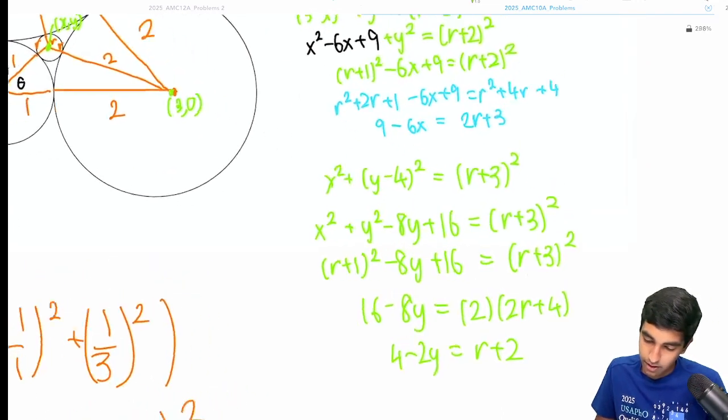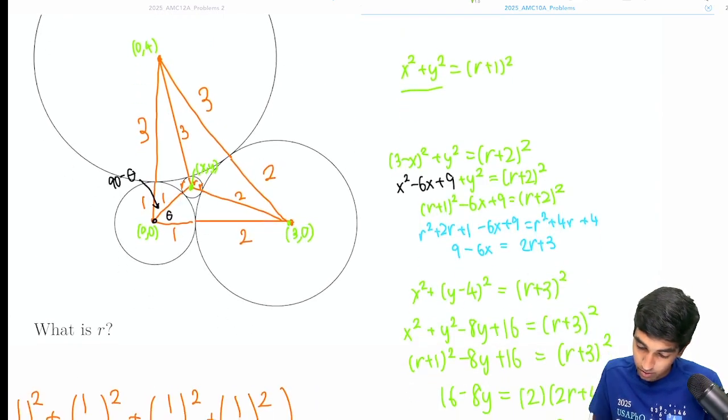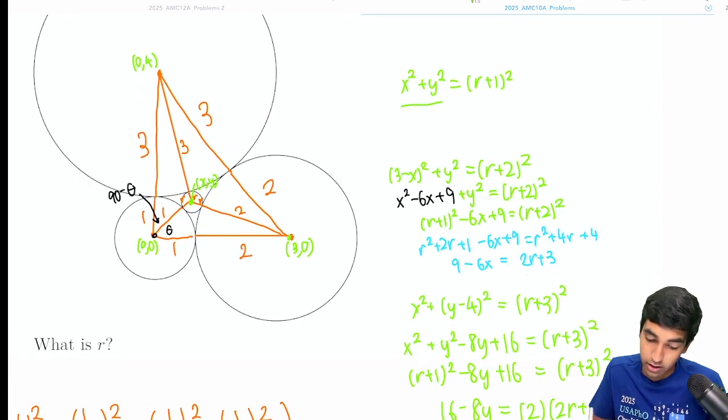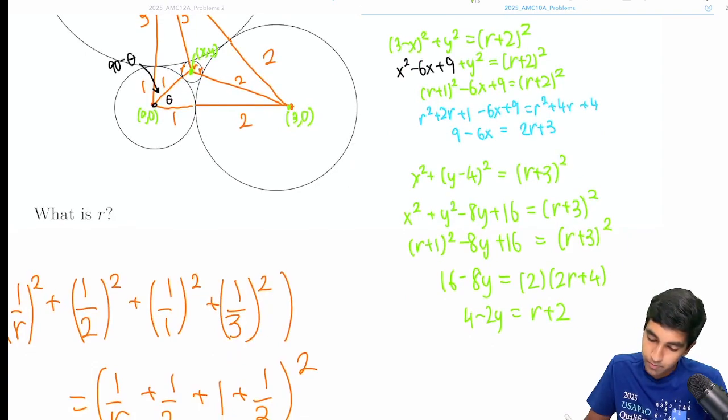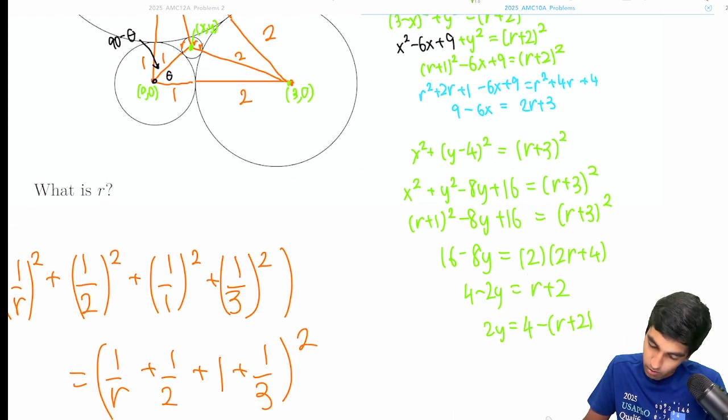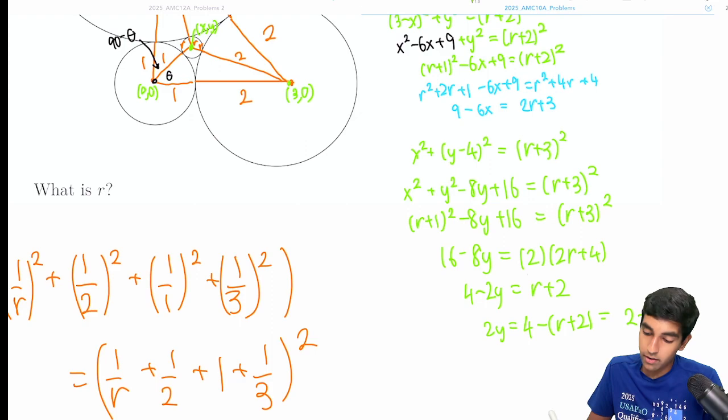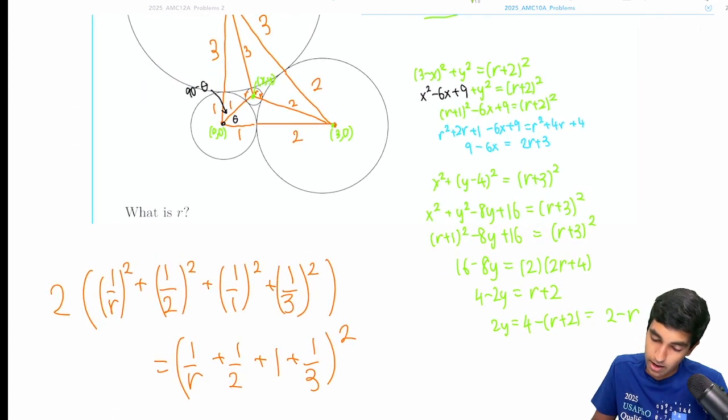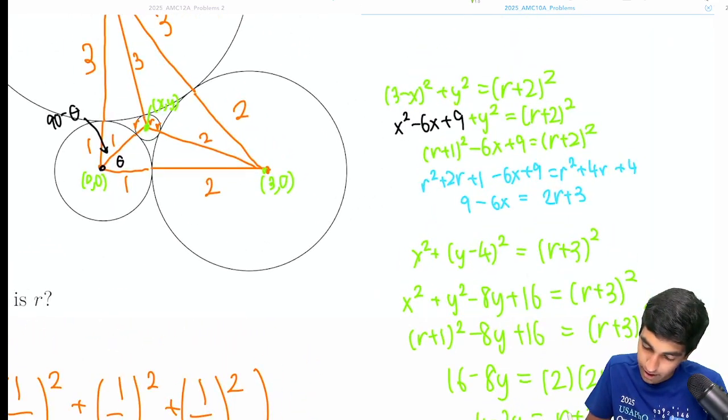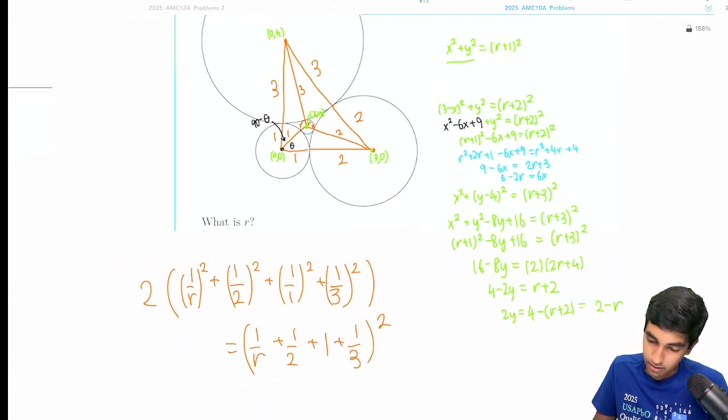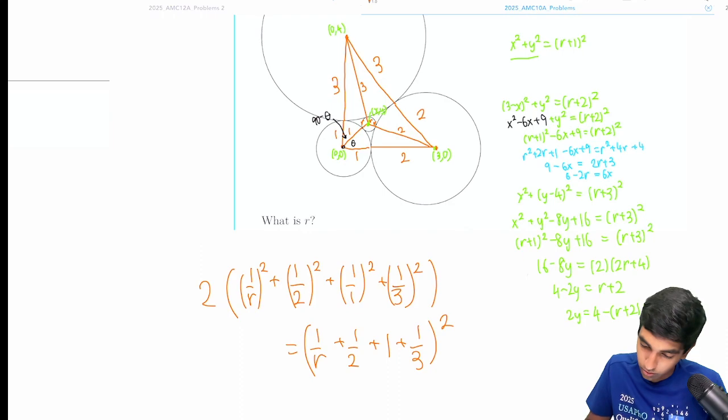So now we've got these nice relationships here. And we're going to try and substitute it back to our original condition because we really care about r. So let's just say 2y is 4 minus r plus 2. That's equal to 2 minus r. So 2 minus r is 2y. And then similarly here, we get that 6 minus 2r is 6x. So now we just substitute that back. x squared plus y squared equals r plus 1 squared.